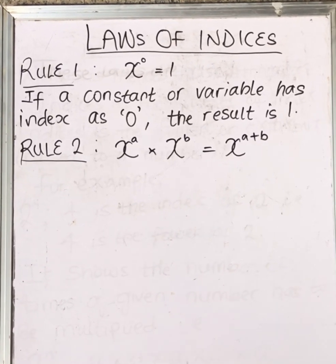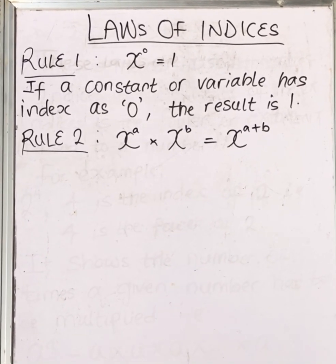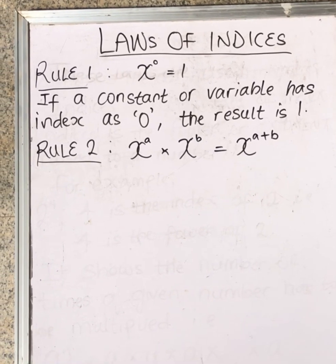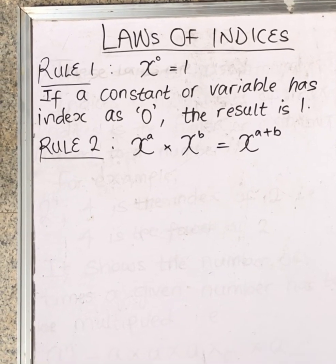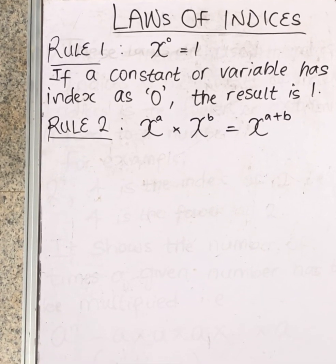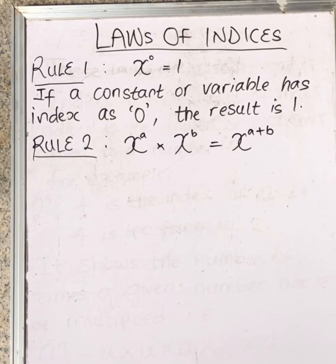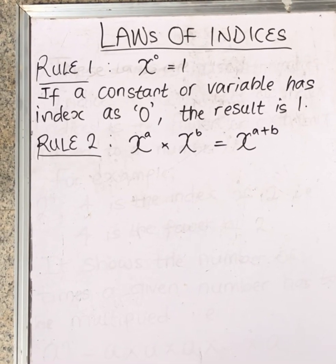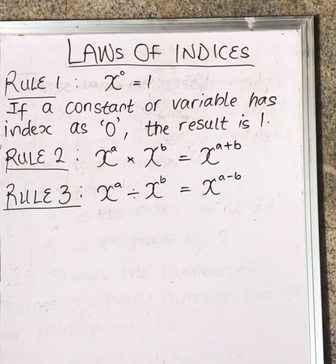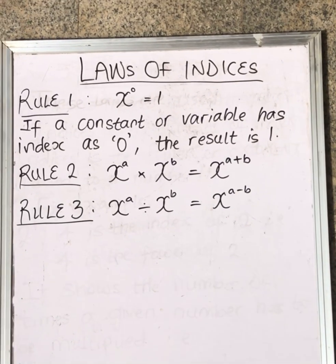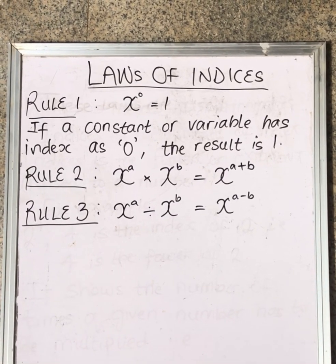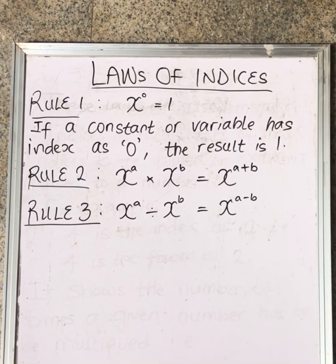Note that the numbers below are called the base and the numbers above are called indices, index, or power. Rule number two says when two of the same base are multiplying each other with different powers, we add the powers.